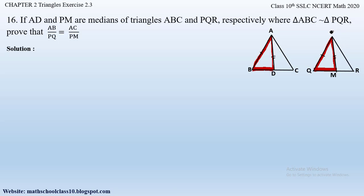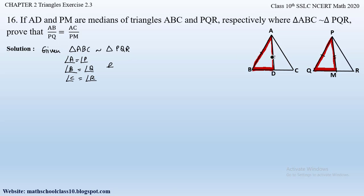Given: triangle ABC is similar to triangle PQR. Since the two triangles are similar, the corresponding angles will be equal: angle A = angle P, angle B = angle Q, and angle C = angle R. Also, the corresponding sides will be in equal proportion: AB by PQ = BC by QR = AC by PR.